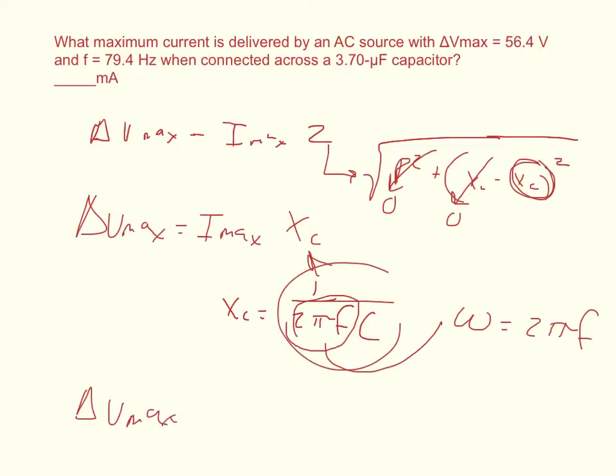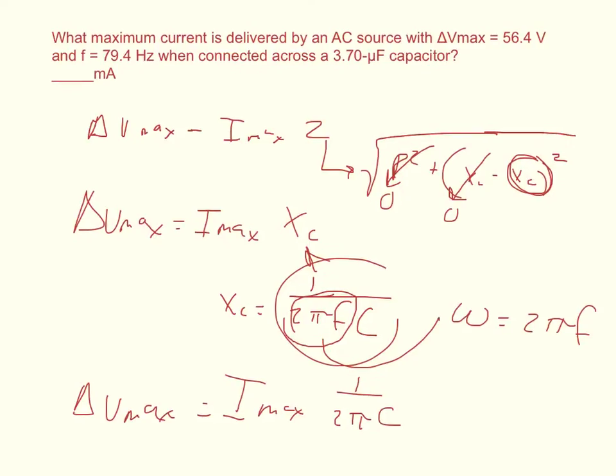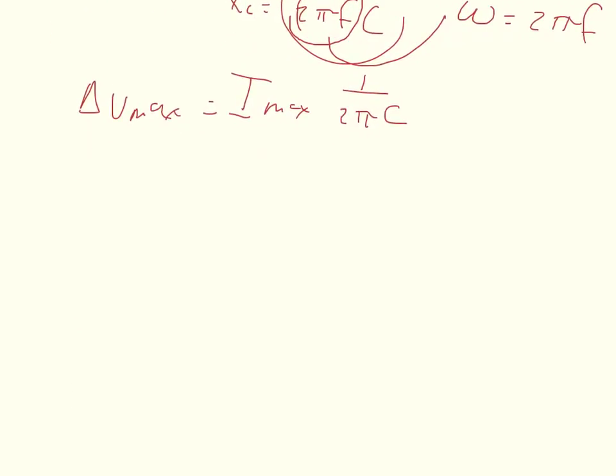ΔVmax is equal to Imax times 1 over 2π times the capacitance. And then we're going to solve for the current, so ΔVmax...